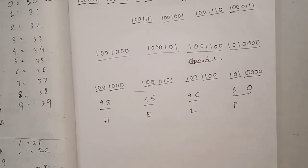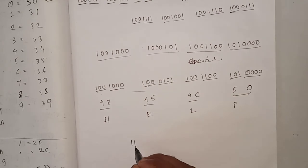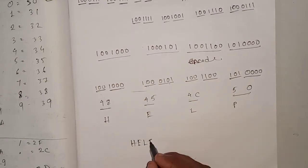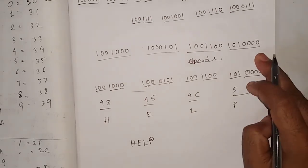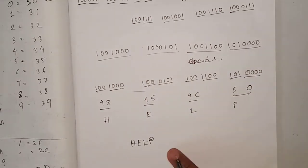Now write the corresponding character for each hex value: 48 = H, 45 = E, 4C = L, 50 = P. So we get the message: HELP. This is how we get the value from binary number to English language.